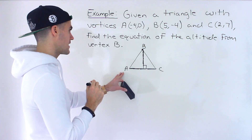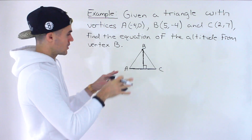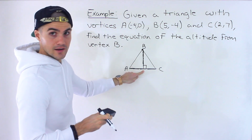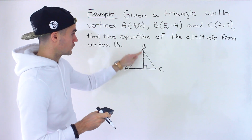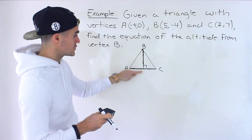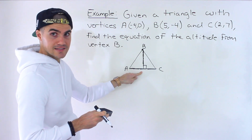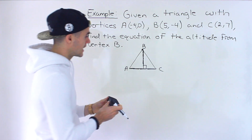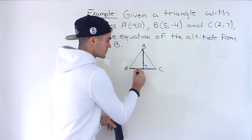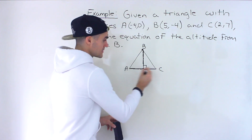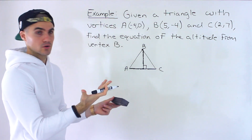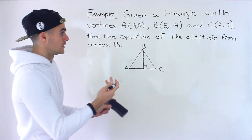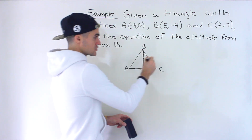In this particular drawing it kind of looks like the median, but this point where the altitude meets the opposite side is not necessarily the midpoint. From the vertex to the opposite midpoint, that's the median. A lot of times, where the altitude and the opposite side intersect is not going to be the midpoint.